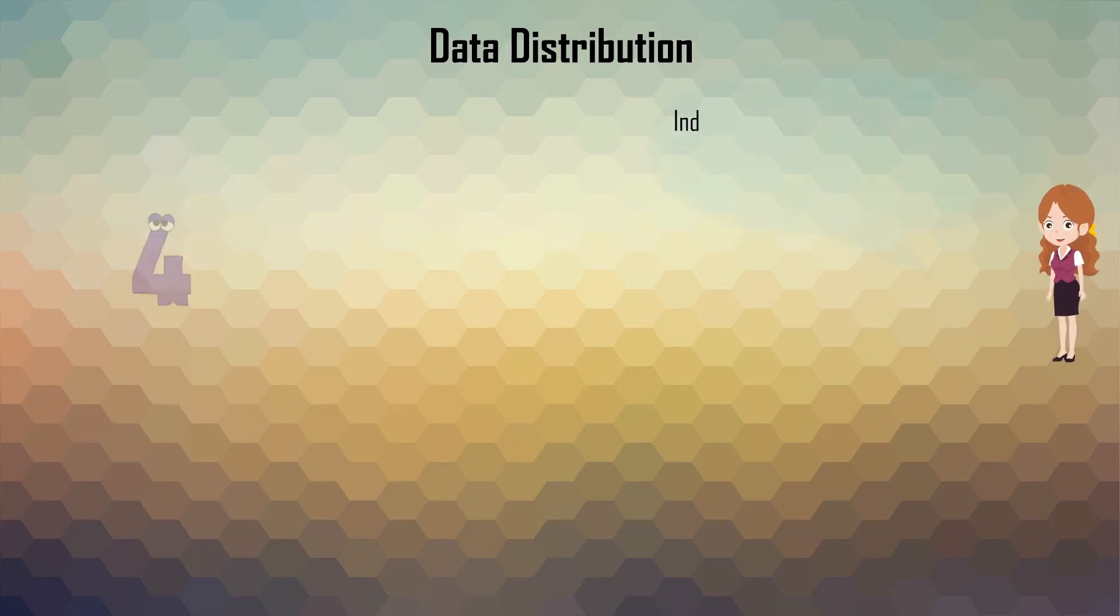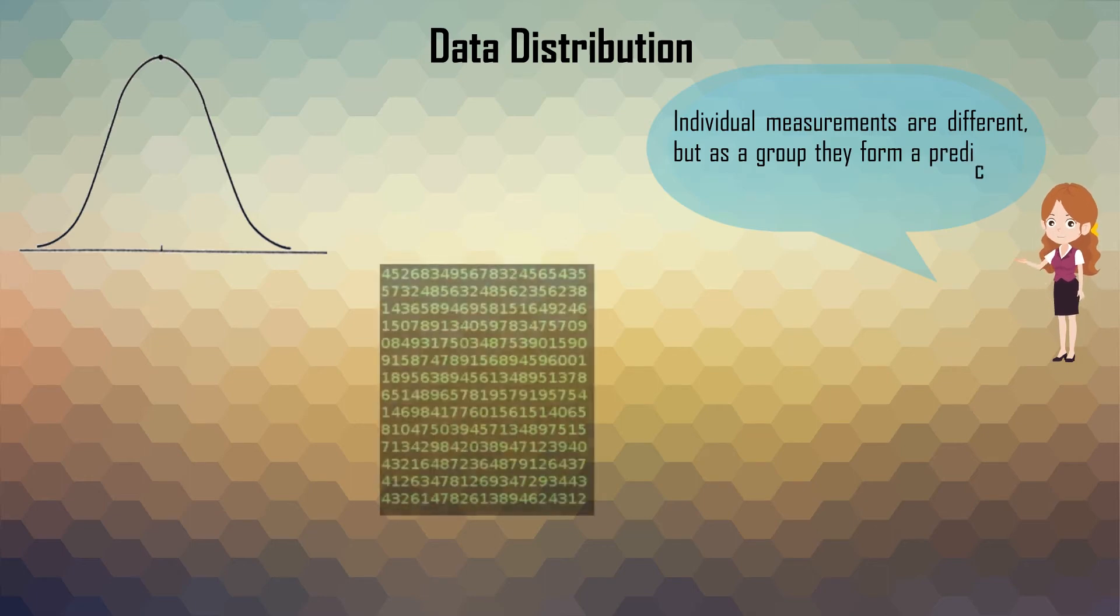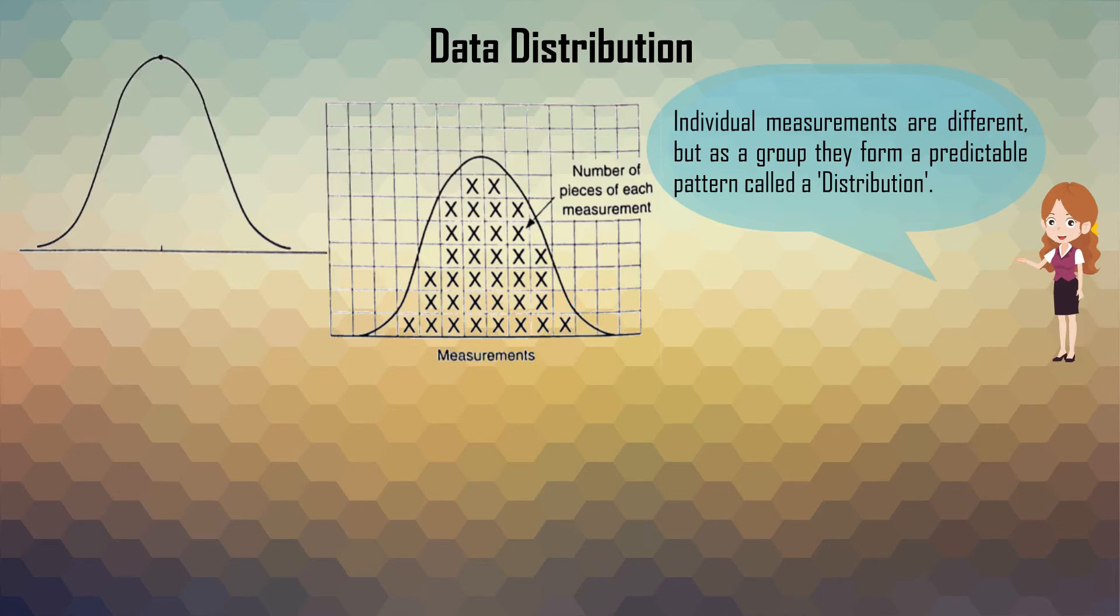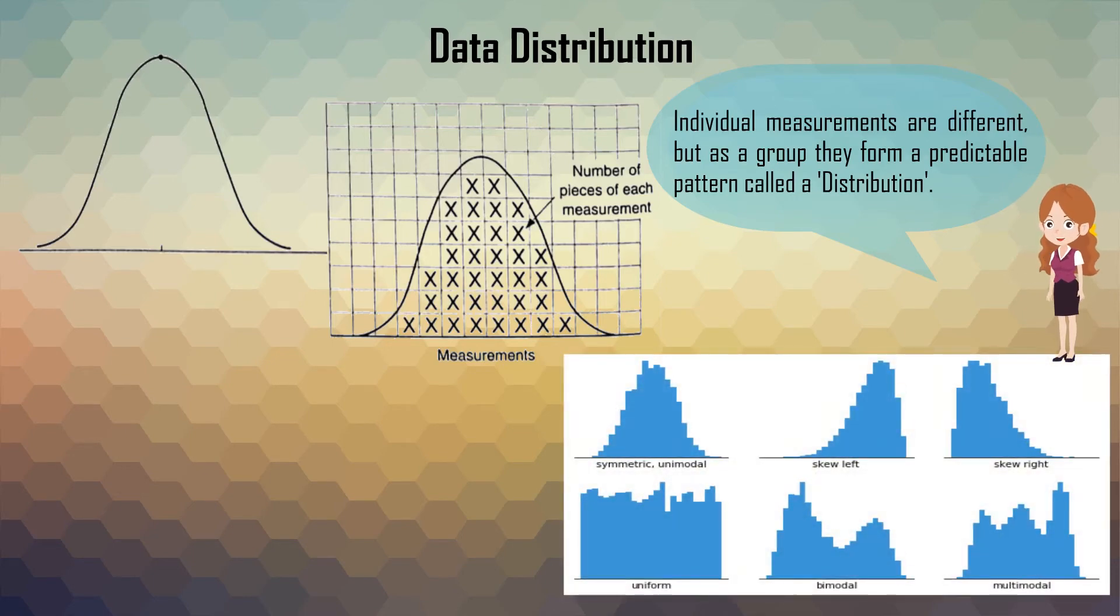Single or individual measurement will not form any data distribution pattern. As a group, they form a predictable pattern called a distribution. For example, the histogram image displays different patterns as the data distribution is different.